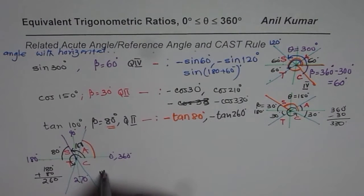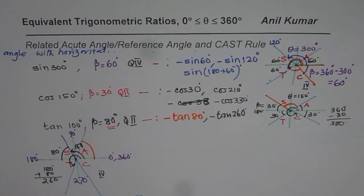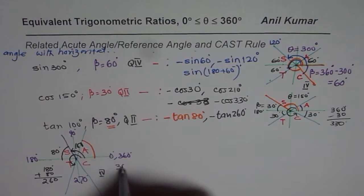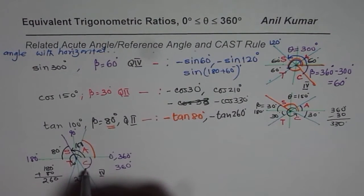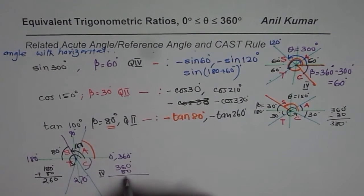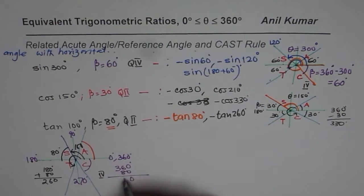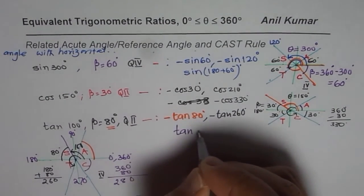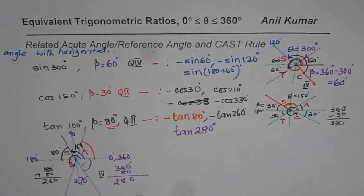For quadrant 4, tan is negative, so we do not write a negative sign. The angle is 360 minus 80, which gives 280 degrees. So tan of 280 degrees is another equivalent trigonometric ratio for tan of 100 degrees.